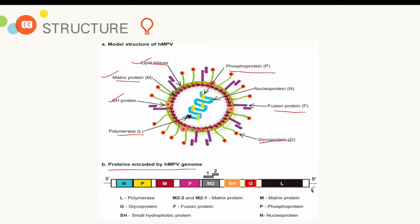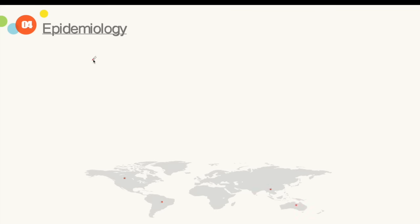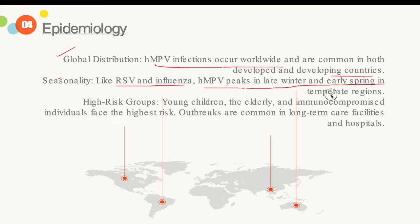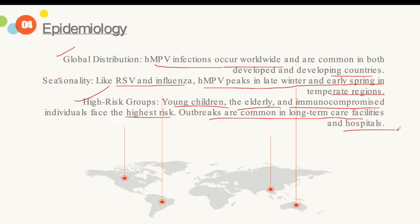Regarding epidemiology, HMPV infections occur worldwide in both developed and developing countries. Similar to RSV and influenza, HMPV peaks in late winter and early spring in temperate regions. High-risk groups include young children, the elderly, and the immunocompromised. Outbreaks are particularly common in long-term care facilities and hospitals.